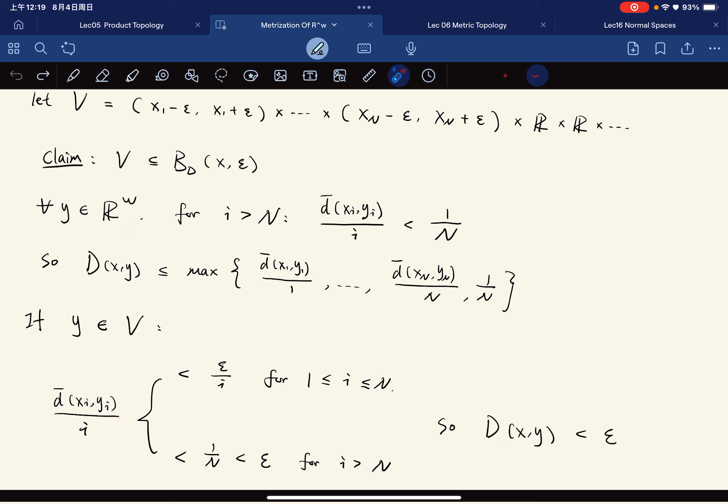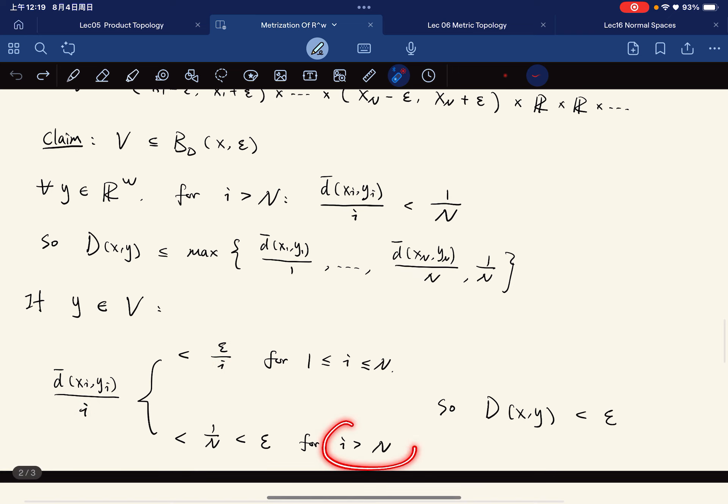If i is between 1 and n, then this will be less than ε. Look at this, and we divide by i.